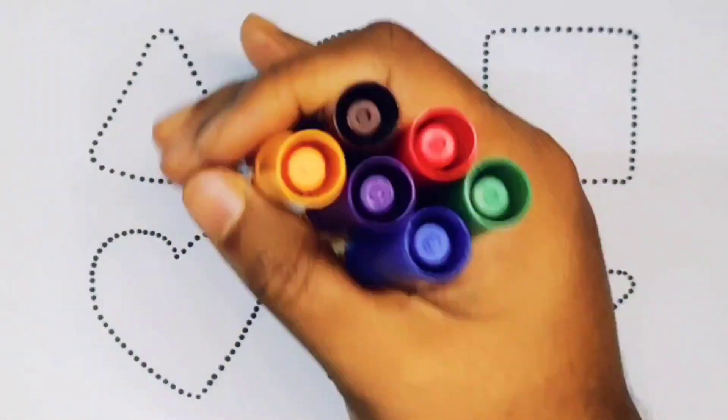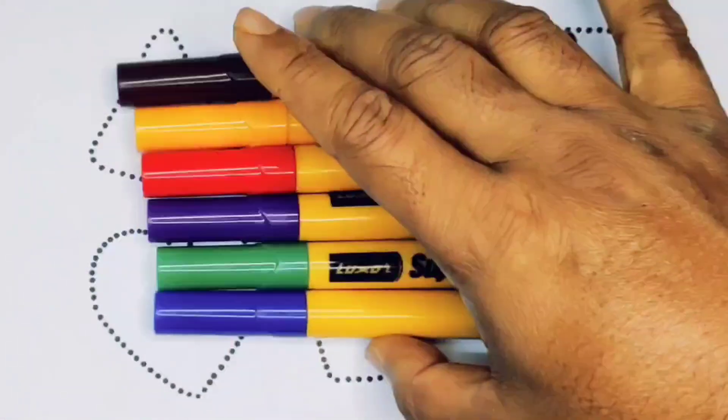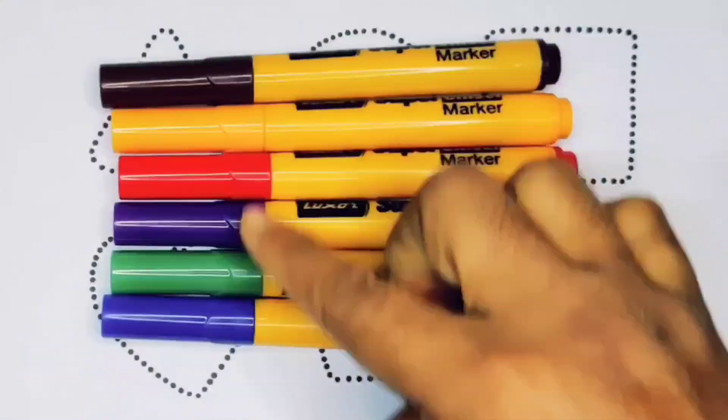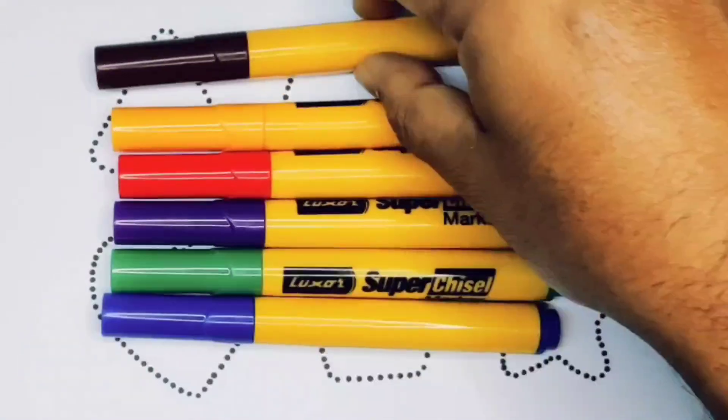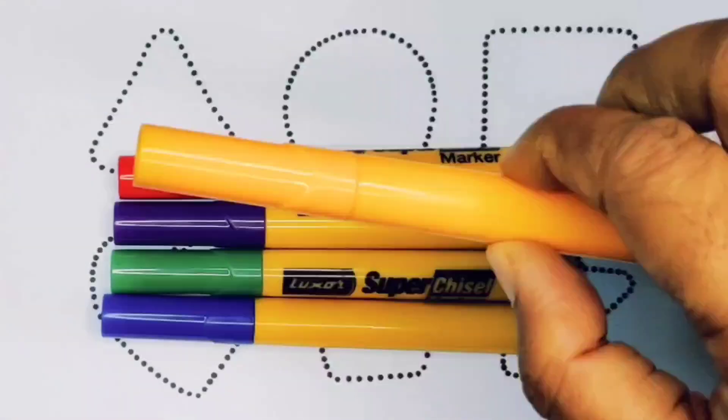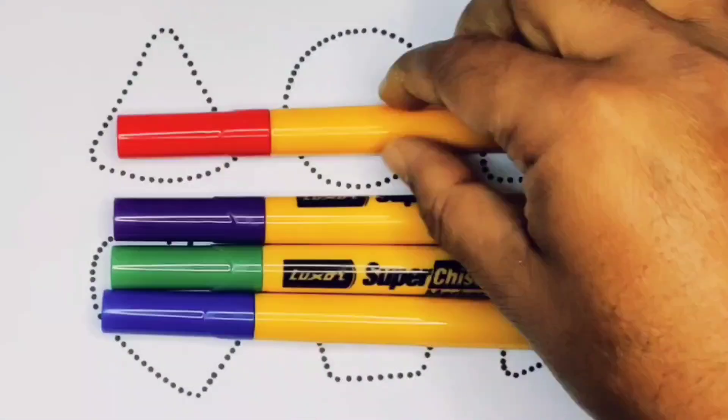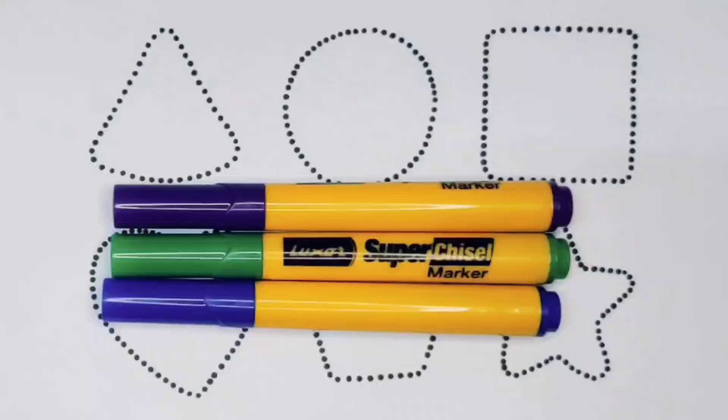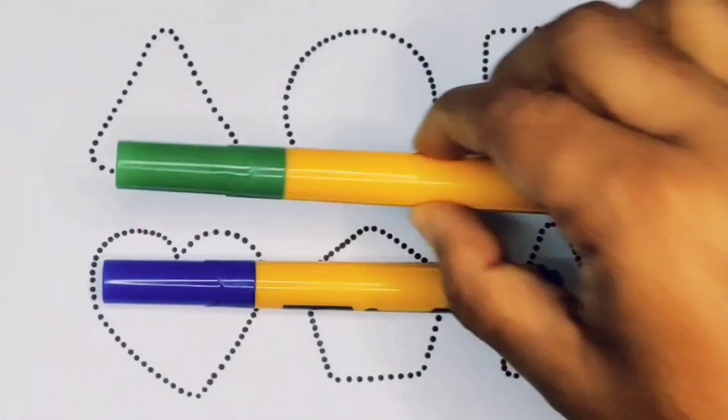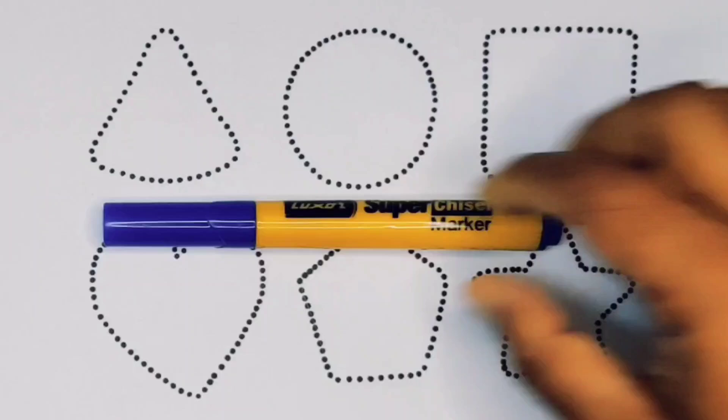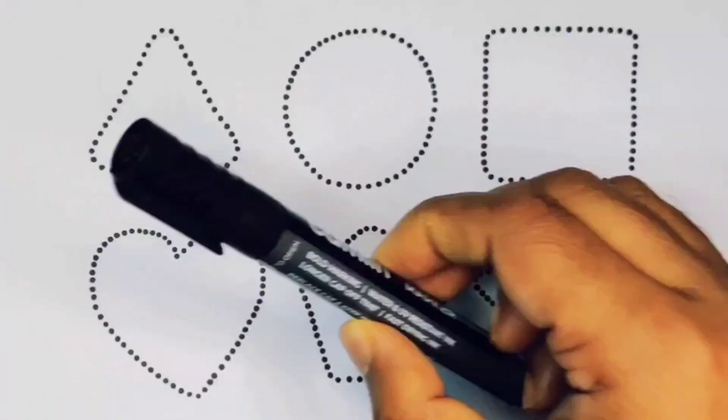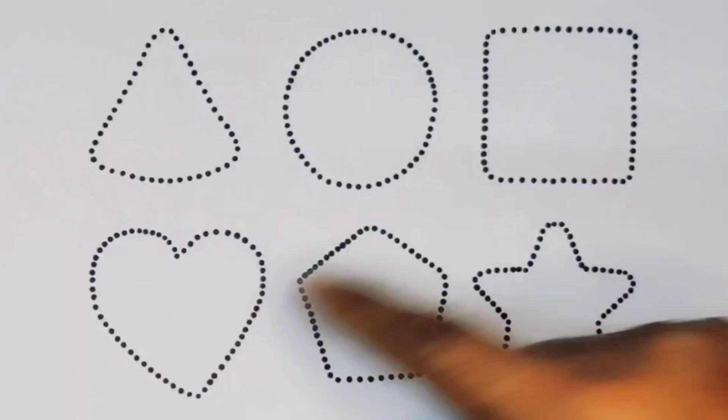Hello kids, welcome to my new video. First we're going to know the colors name: chocolate color, orange color, red color, purple color, green color, blue color, and black color. Now let's learn the 2D shapes.